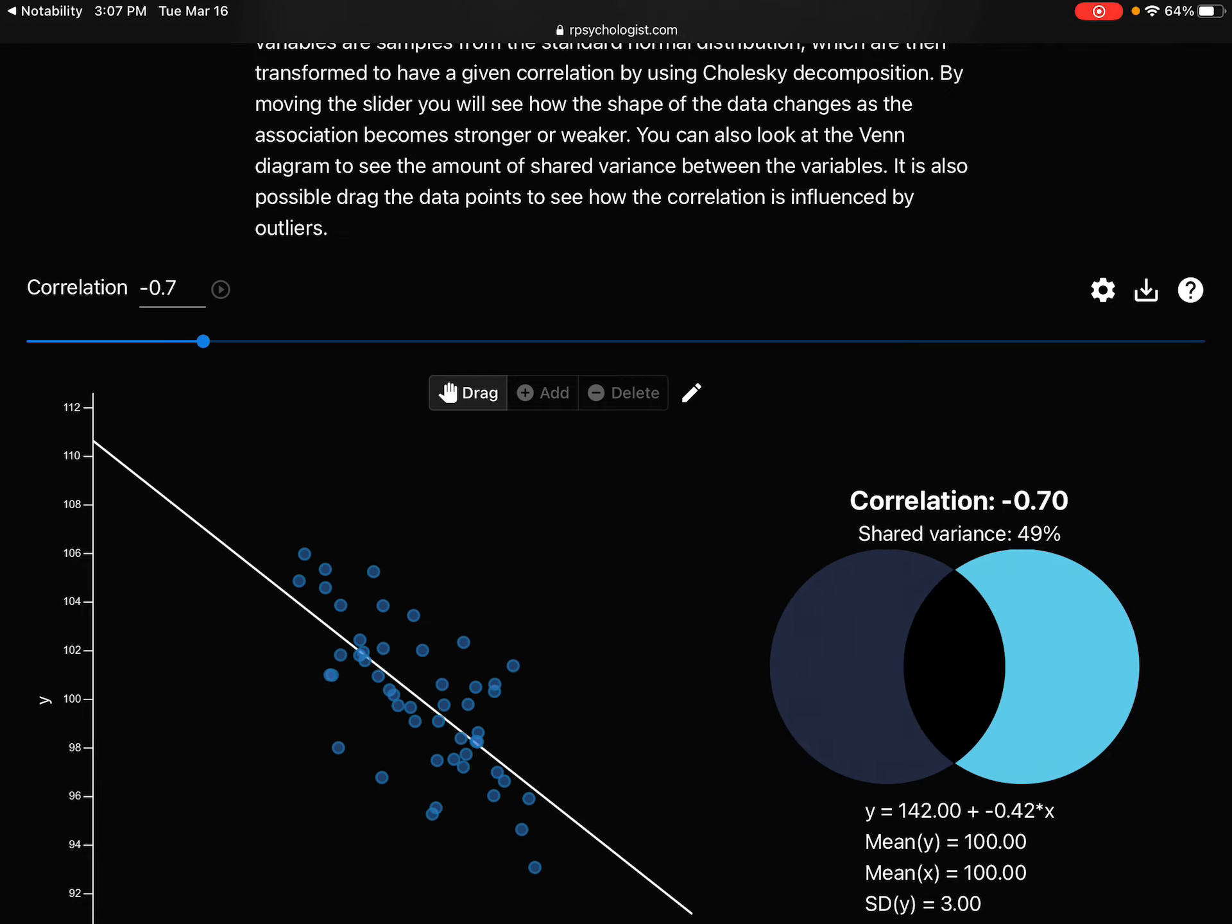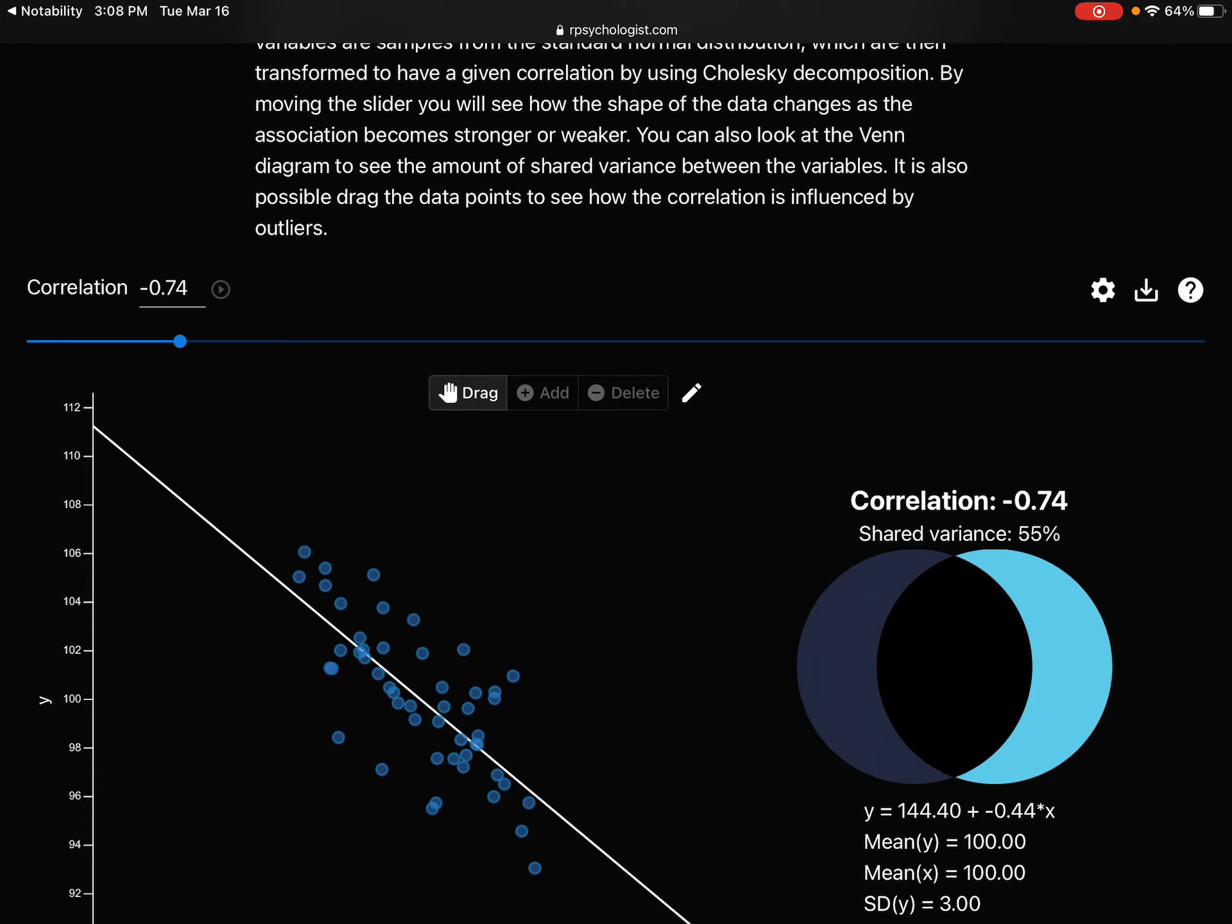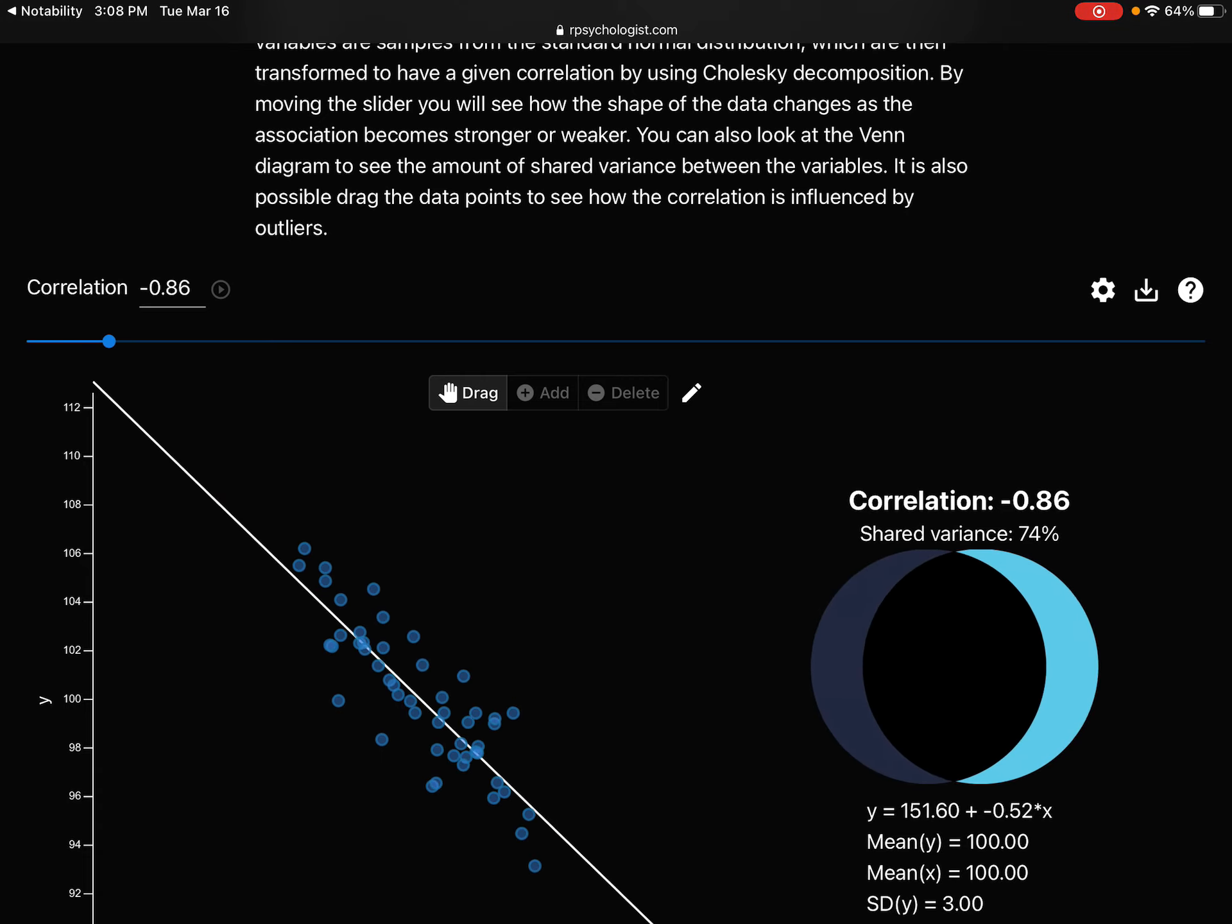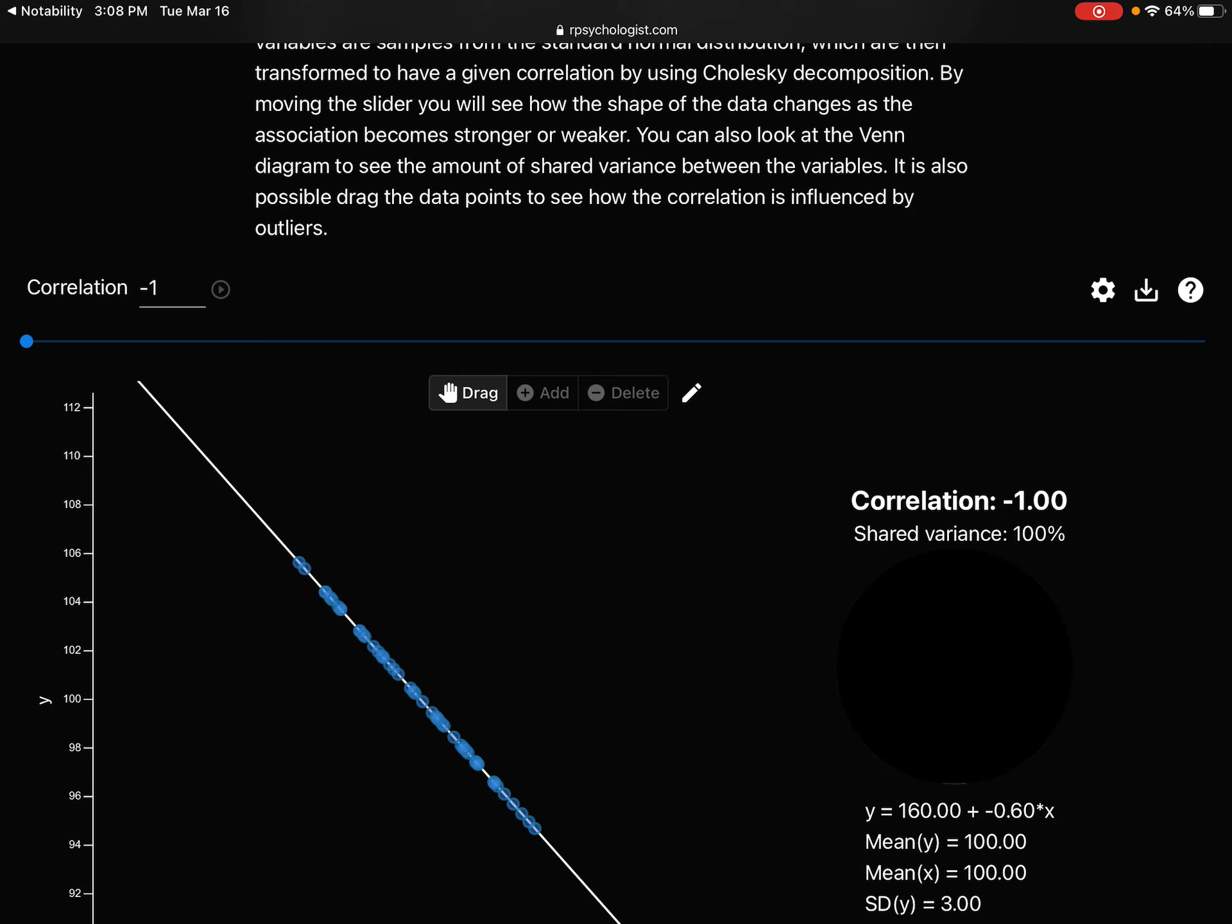You can drag this slider and you'll notice that as you go to the left, the points start to line up more. They start to become more linear until we get all the way over, and they're all perfectly on the line, and our correlation is negative 1.